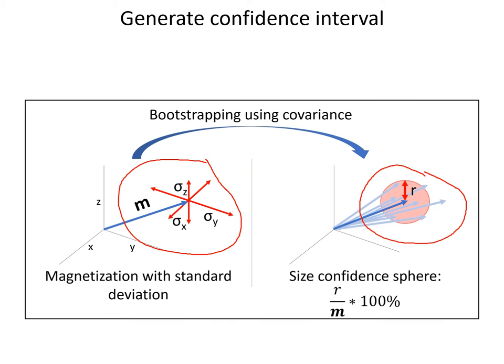To obtain that, we bootstrap the magnetization vector with the help of the covariance matrix 10,000 times. Then we use these 10,000 vectors to create the 95% confidence sphere, of which 95% of the vectors fall within this sphere. The size of this confidence sphere is then expressed by defining the radius of the sphere by the norm of the magnetization vector times 100%.